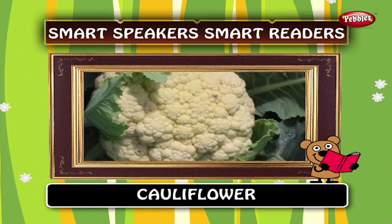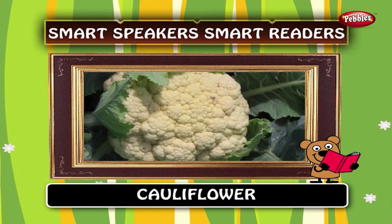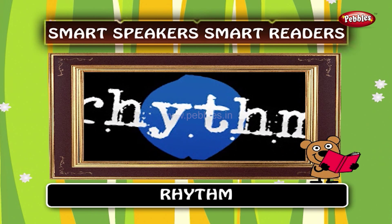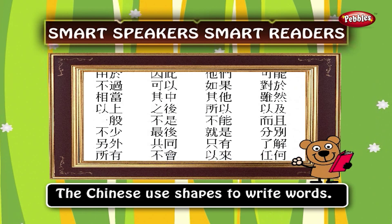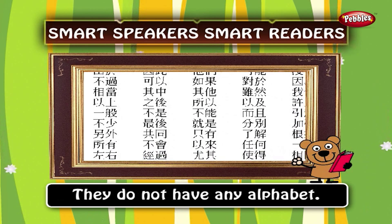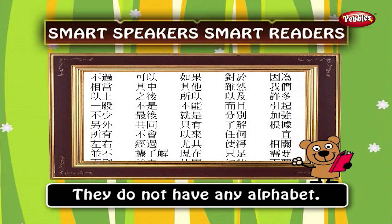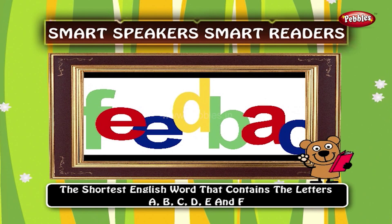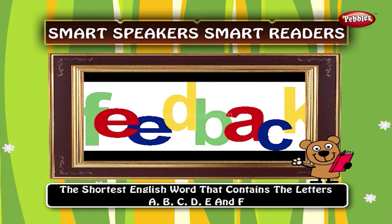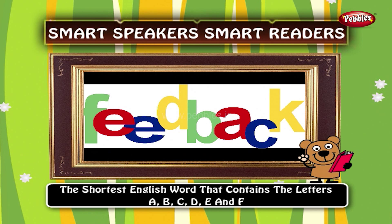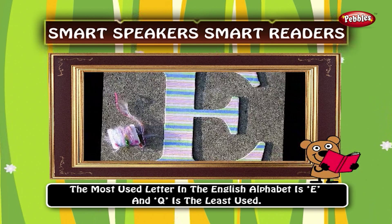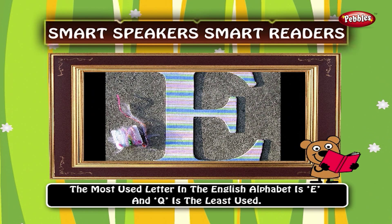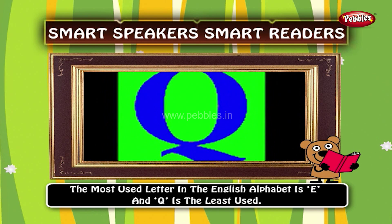The word 'cauliflower' has all the vowels. The word 'rhythm' has no vowels. The Chinese use shapes to write words; they do not have any alphabet. The shortest English word that contains the letters A, B, C, D, E, and F is 'feedback'. The most used letter in the English alphabet is E, and Q is the least used.